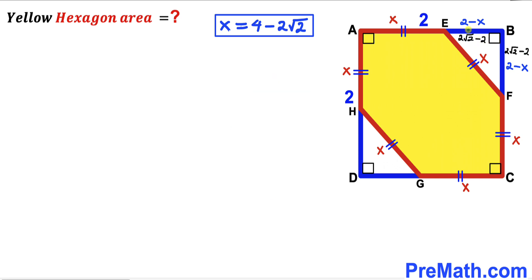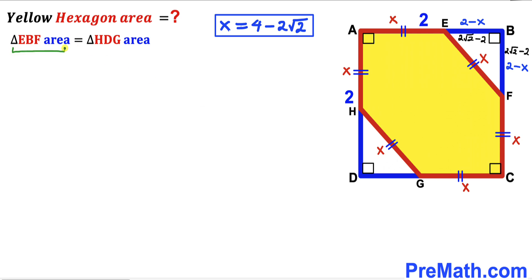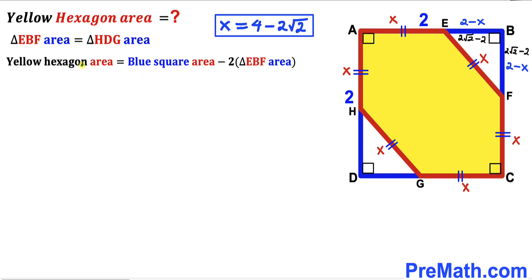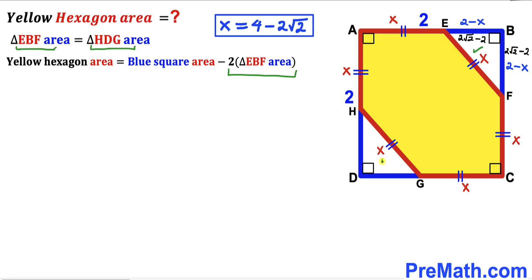The side lengths of triangle EBF are both 2√2 minus 2. Observing that right triangle EBF and right triangle HDG are identical, their areas are equal. The area of the yellow hexagon equals the area of the whole blue square minus 2 times the area of triangle EBF (since triangle EBF and triangle HDG have the same area).